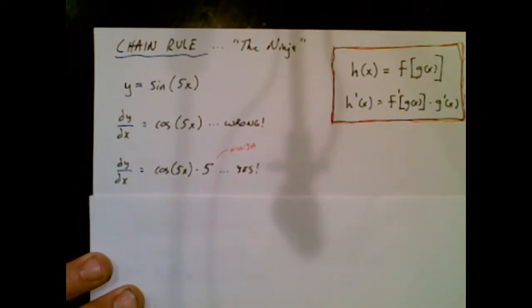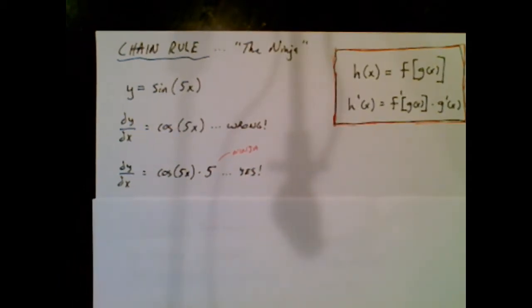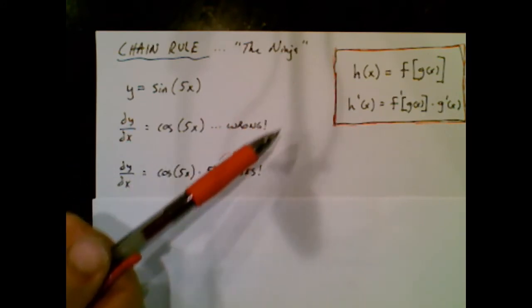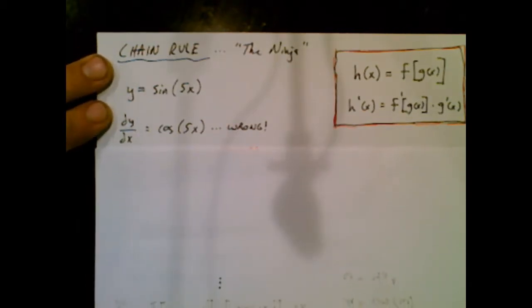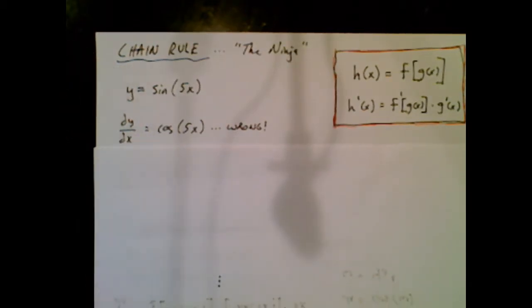And you'd say, well, what the heck is the ninja? You see this shadow looming over here? That's the shadow of the ninja, and that ninja is sneaky, and it'll get you because guaranteed every single person in calculus will take something like that, and as they're working fast, quickly,